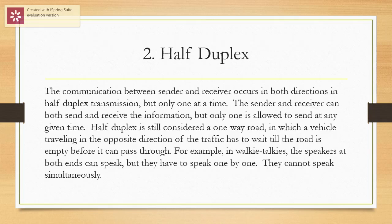We have half-duplex. The communication between sender and receiver occurs in both directions in half-duplex transmission, but only one at a time. The sender and receiver can both send and receive the information, but only one is allowed to send at any given time. Half-duplex is still considered a one-way road, in which a vehicle traveling in the opposite direction has to wait till the road is empty before it can pass through. For example, in walkie-talkies, the speakers at both ends can speak, but they have to speak one by one — they cannot speak simultaneously.